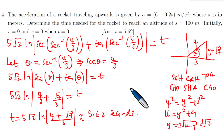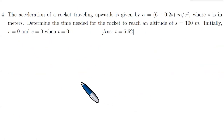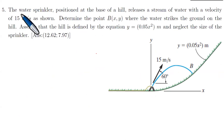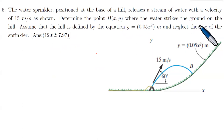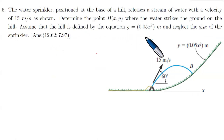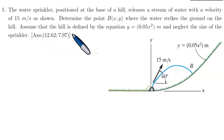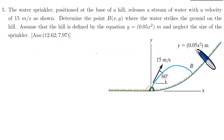Focusing on the third question, we shall focus on this particular question here. We are told that the water sprinkler positioned at the base of a hill releases a stream of water with a velocity of 15 meters per second. Determine the point B where the water strikes the ground on the hill. Assume that the hill is defined by the equation y equals 0.05x squared meters, and neglect the size of the sprinkler.